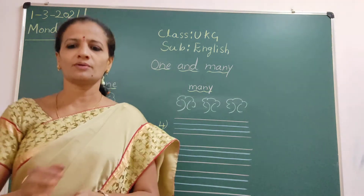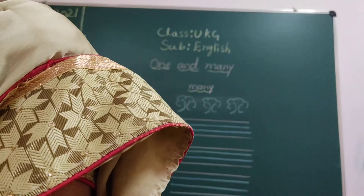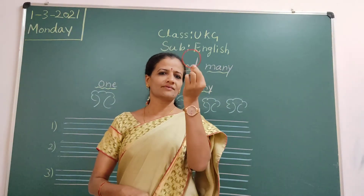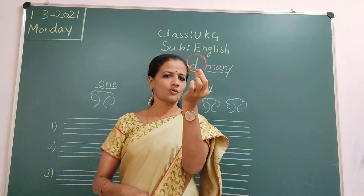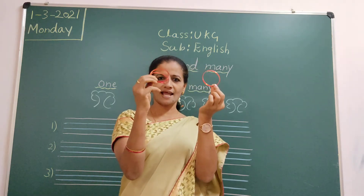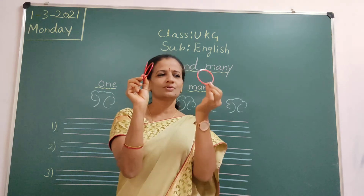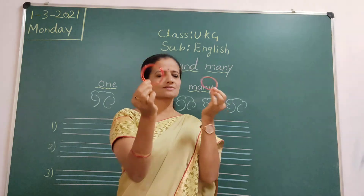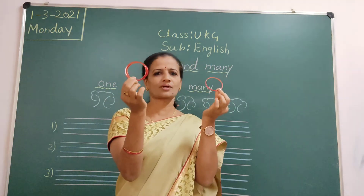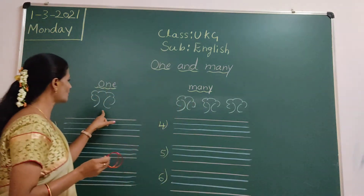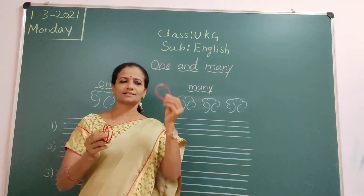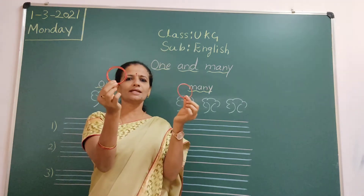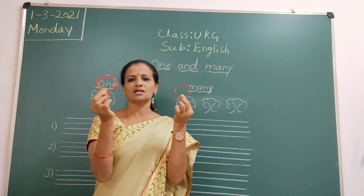I will show one more. See children, what is this? Bangle. In our hand, how many bangles are there children? One. See here in this hand, how many? Two. One bangle, many bangles. One bangle, many bangles. Understood? One tree, many trees. One bangle, many. Understood?